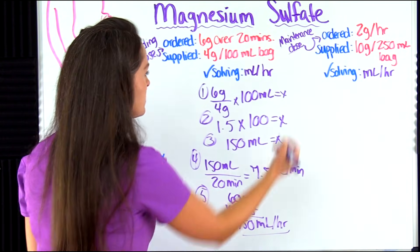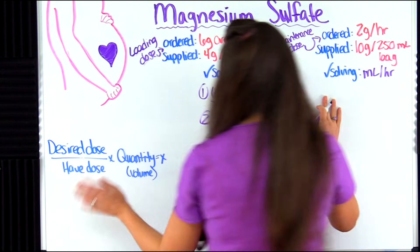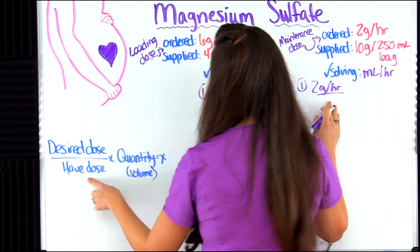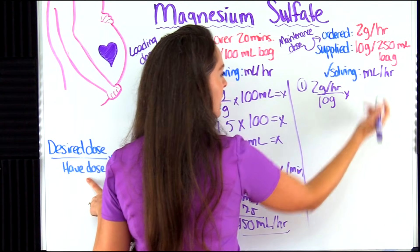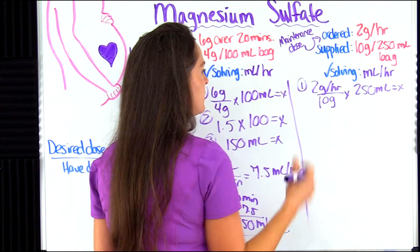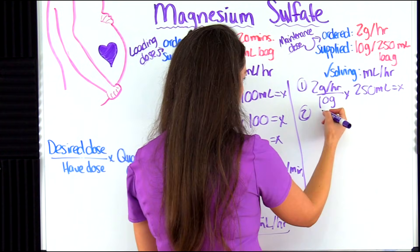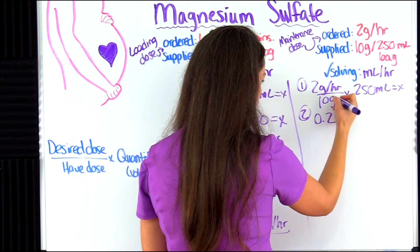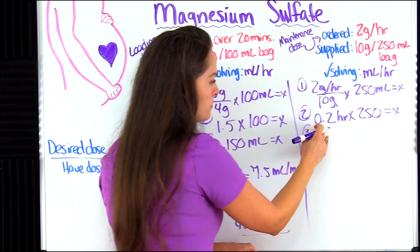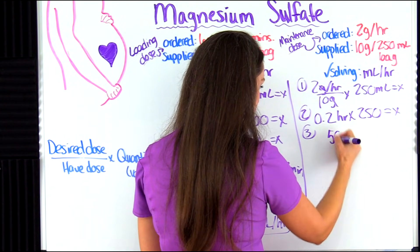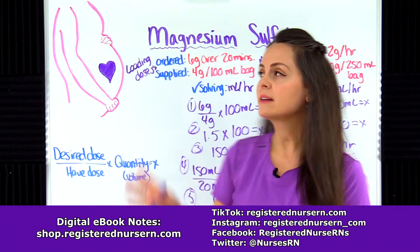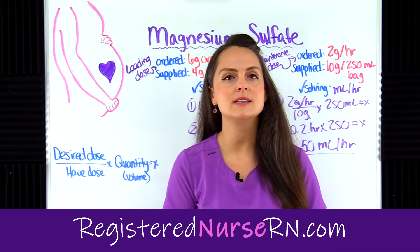Now let's do the maintenance dose. Using our formula again, the desired dose is 2 grams per hour over what we have, which is 10 grams, multiplied by the volume — 250 mLs — equals X. The units match. Dividing 2 by 10 gives us 0.2; the grams cancel, leaving the hours. Multiply 0.2 by 250 and we get 50 milliliters per hour — that is our maintenance dose rate. If you'd like more practice problems on these dosage calculations, you can access a free quiz via the link in the description below.